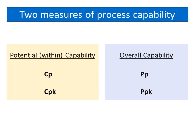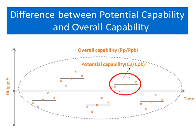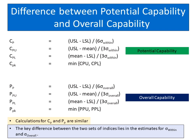There are two measures of process capability: potential capability, represented by CP and CPK, and overall capability, represented by PP and PPK. Potential capability only accounts for the variation within subgroups, while overall capability accounts for the overall variation of all measurements taken. The key difference between the two sets of indices lies in the estimates for within standard deviation and overall standard deviation.